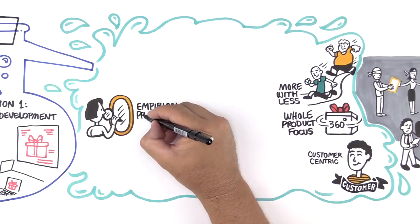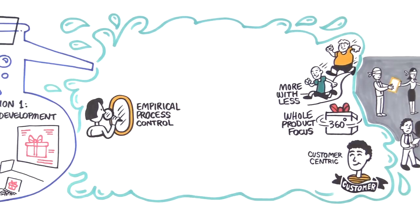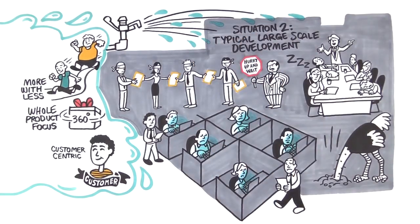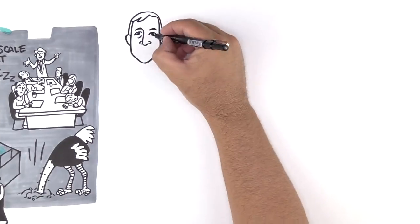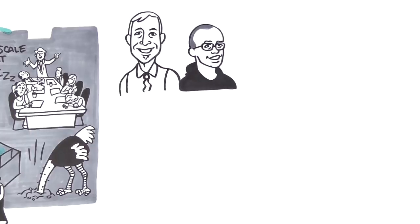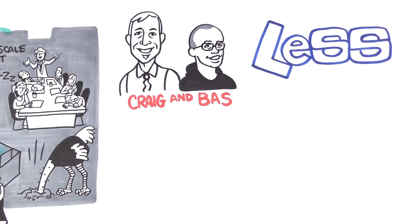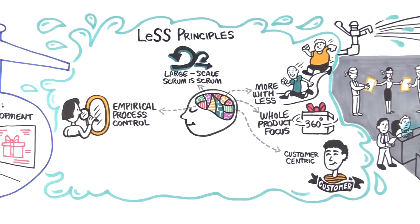Is it possible to take what works so naturally in small-scale development and apply it to large-scale development? This question has driven Craig Larman and Bas Vodde for over a decade. It's led to hundreds of experiments and the formulation of LeSS. LeSS is a simple framework for scaling agile development using these principles and some others.